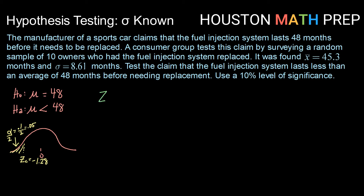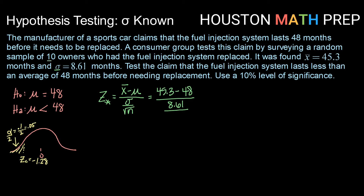Now we need to calculate our z-star, or our test statistic. Because we're working with a mean here and we have our known sigma, that will be x-bar minus mu over our standard error for the sampling distribution, or sigma divided by square root n. For this particular case, x-bar is 45.3, mu is 48, sigma is 8.61, and n is the number in our sample, or 10. Using our calculator to get this value, I get negative 0.992.